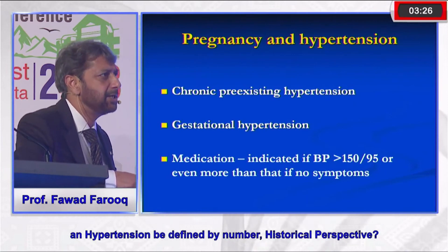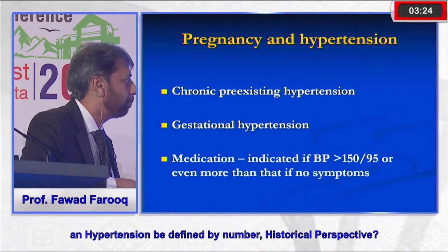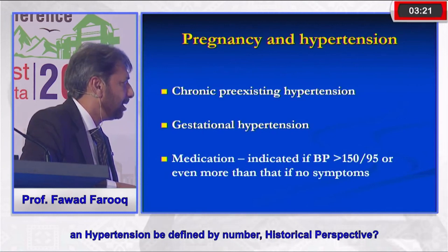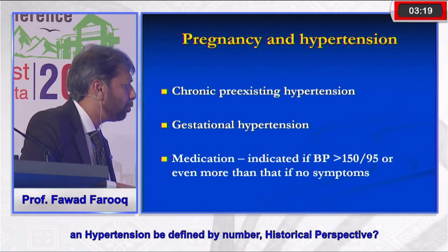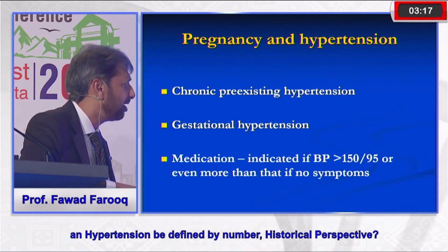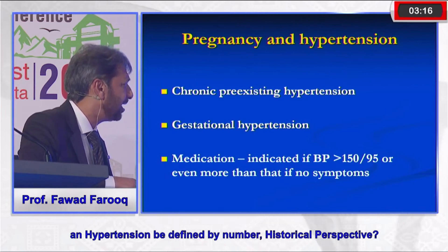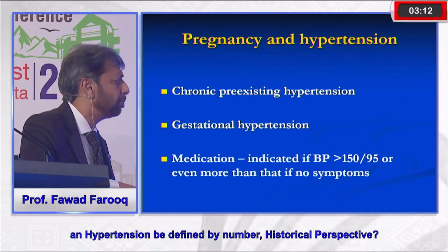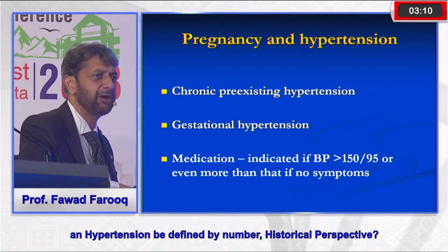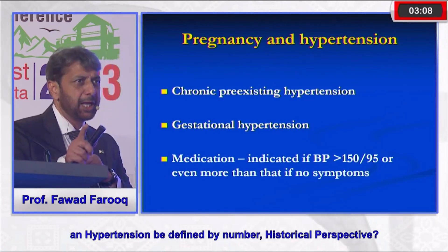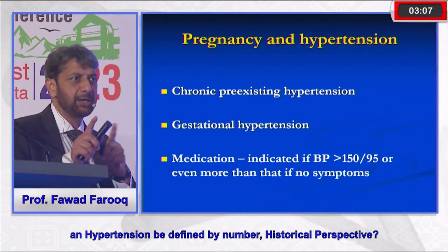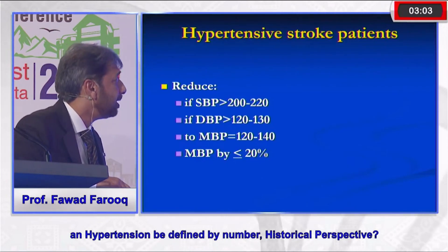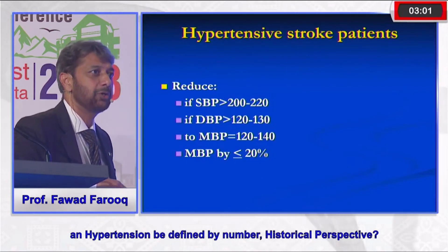Similarly, pregnancy-related hypertension has no strict number. Depending on the type — chronic, pre-existing, or gestational — even without symptoms, you can wait until blood pressure reaches 150/90 before treating. Patient characteristics are the most important factor; blood pressure numbers alone are not sufficient.